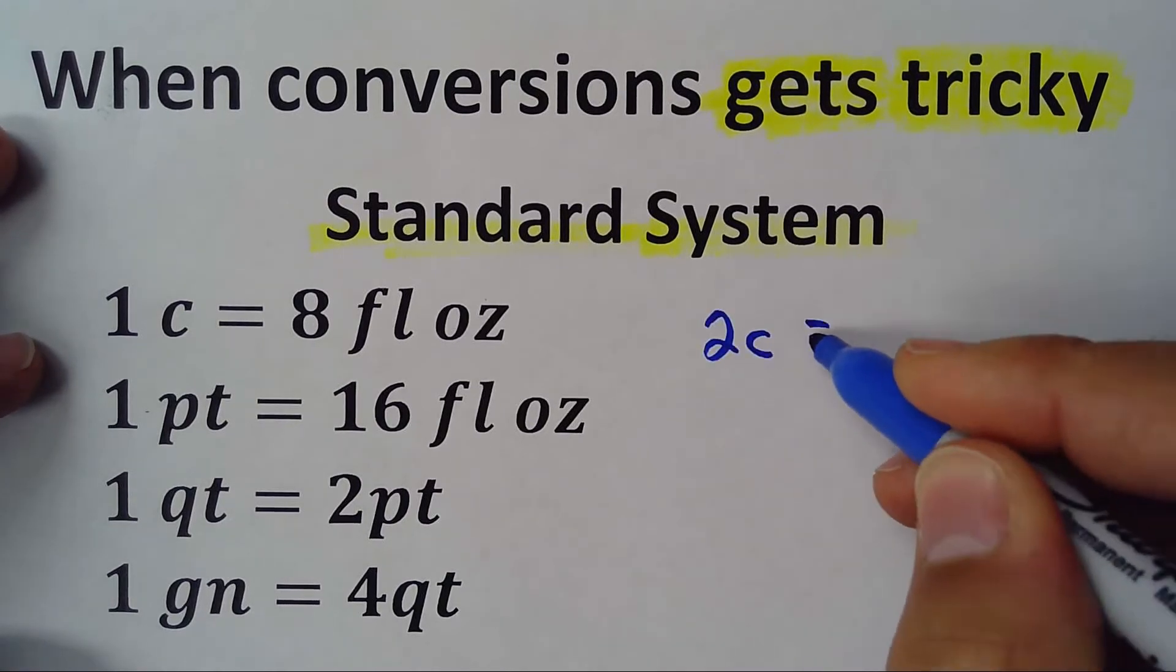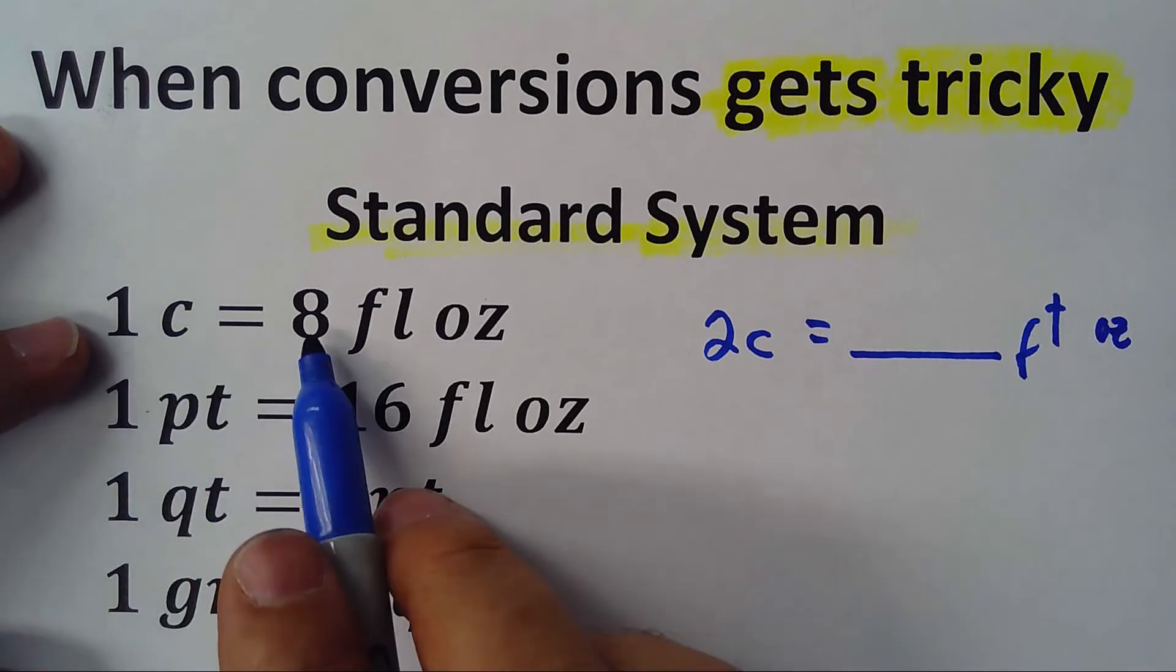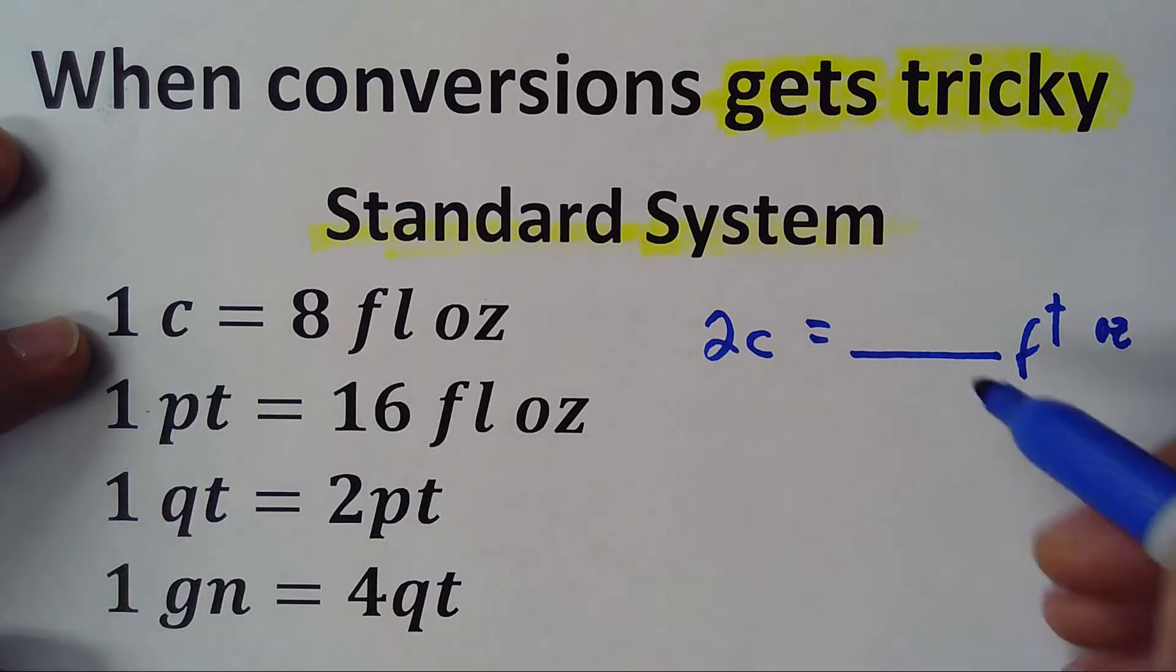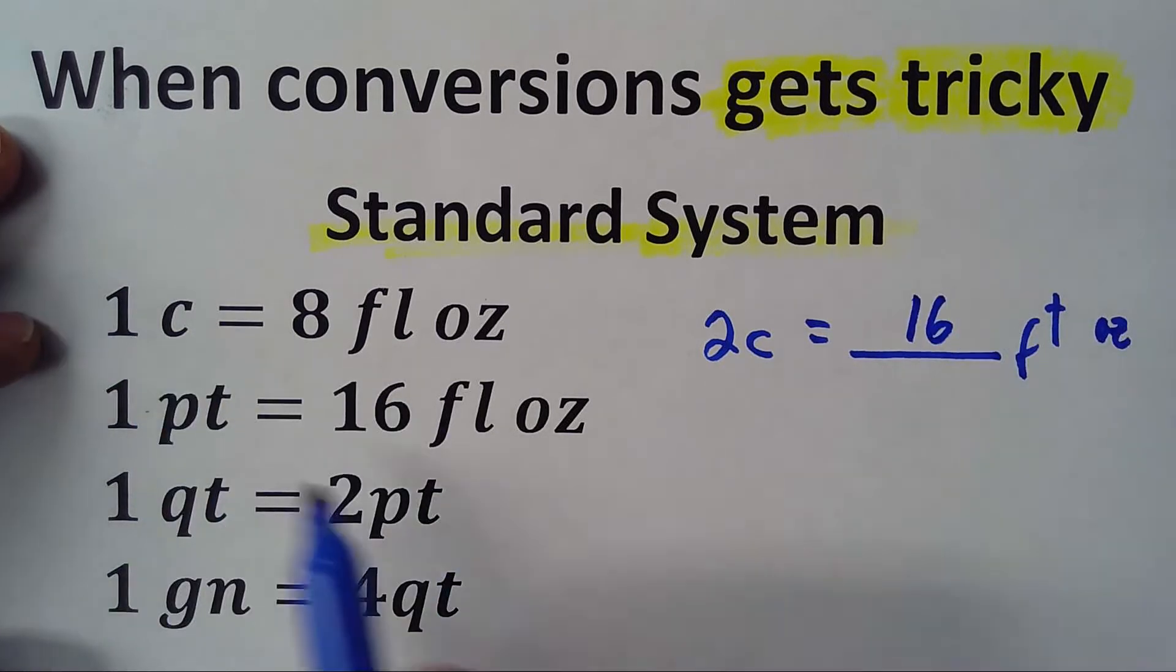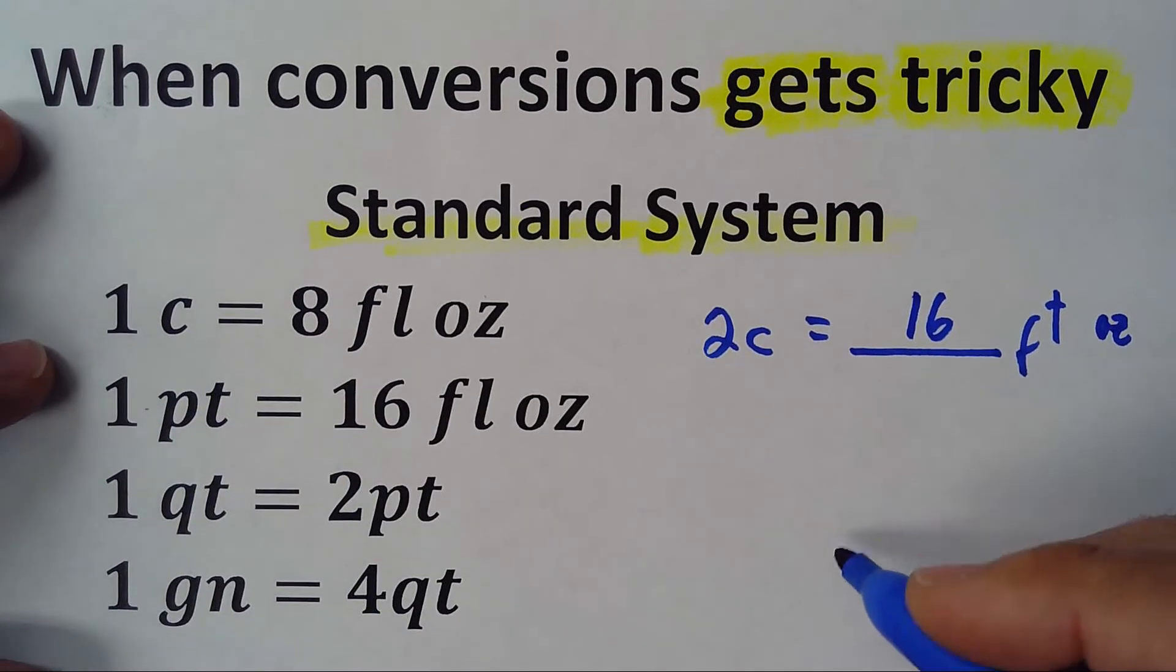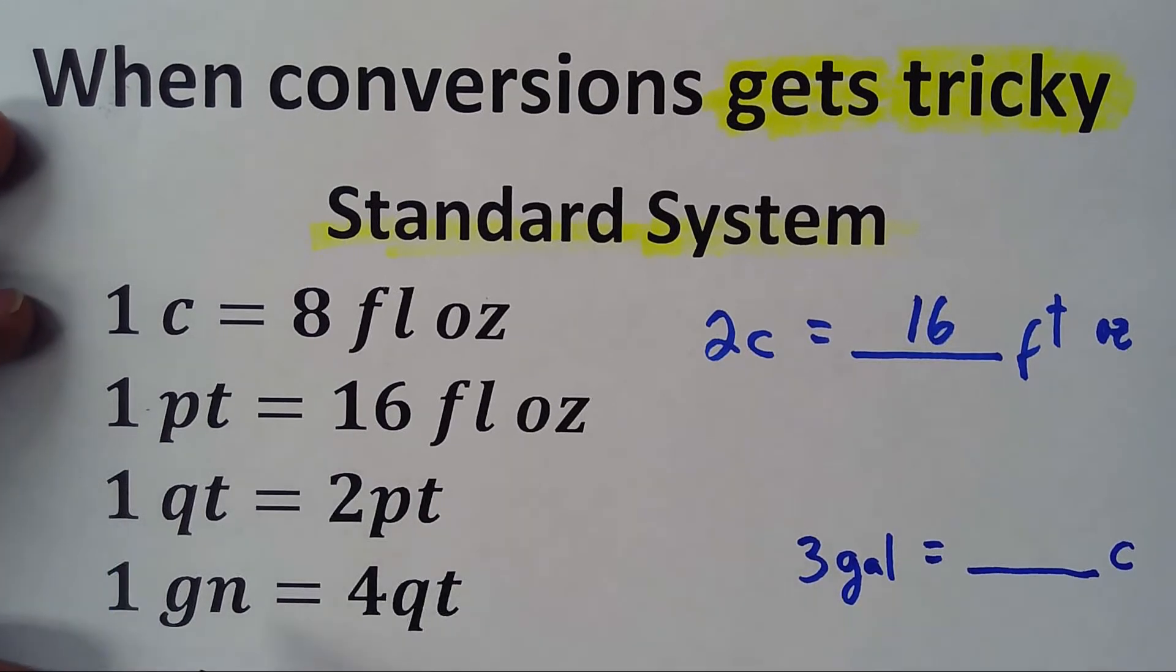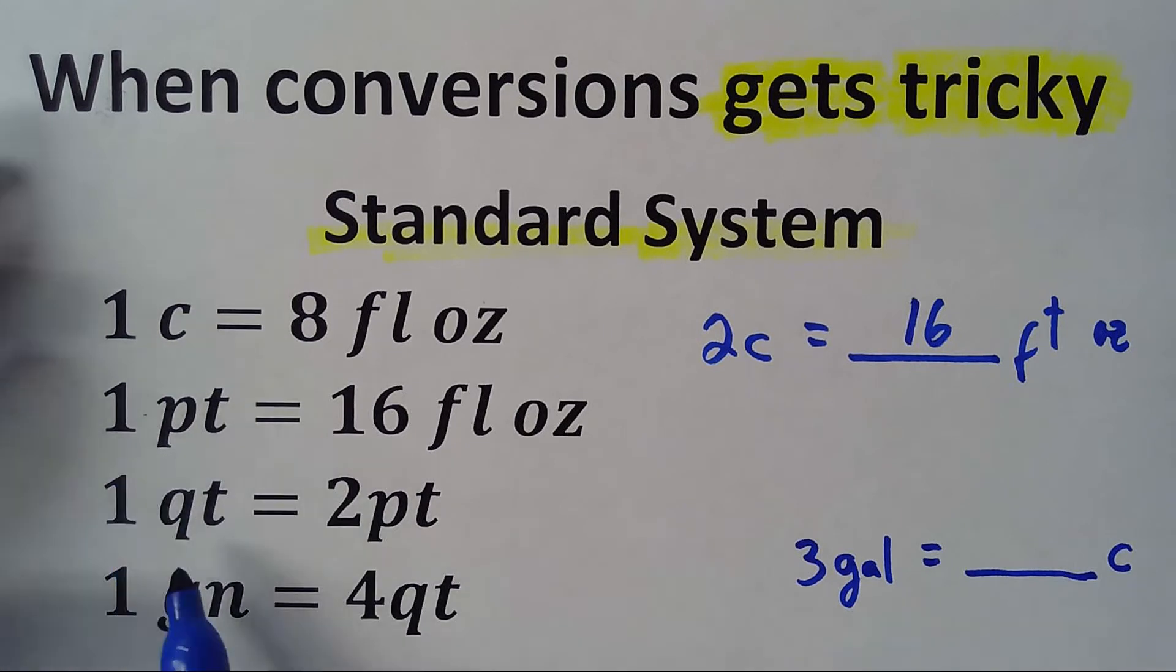Two cups into, for example, fluid ounces - it's very simple because one has eight, so two would be 16. That's very simple. Now the challenge is when you want to know how many cups are in, for example, three gallons. Three gallons equals how many cups? You don't have gallons to cups here, but we can find it because they are related to each other.